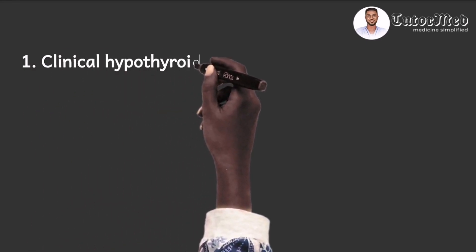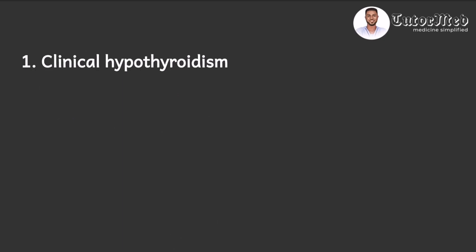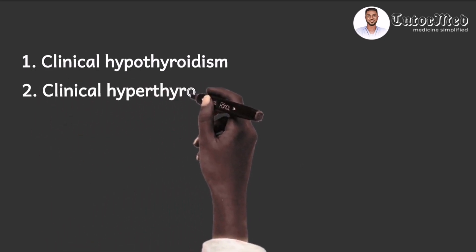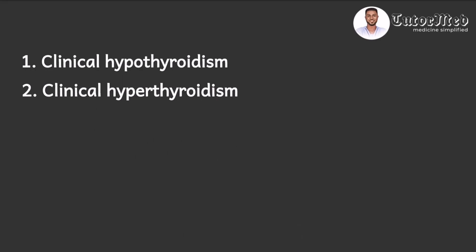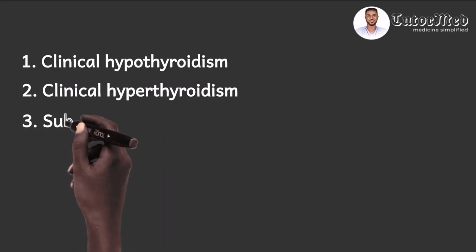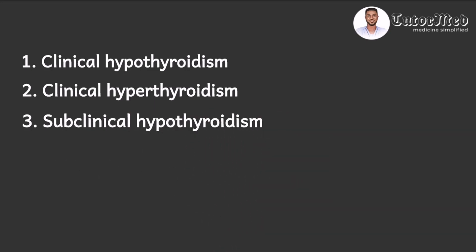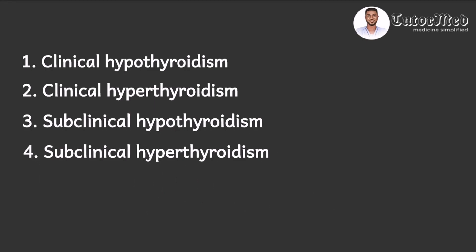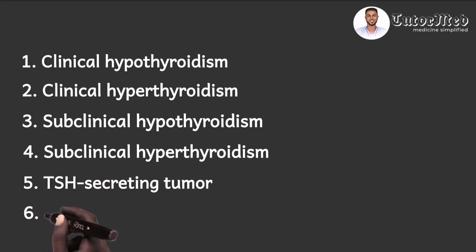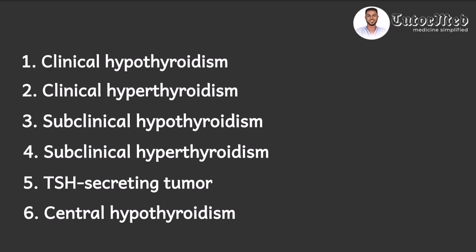By analyzing the thyroid function tests, we can identify several abnormalities. These include clinical hypothyroidism, clinical hyperthyroidism, subclinical hypothyroidism, subclinical hyperthyroidism, a TSH-secreting tumor, and central hypothyroidism. We will focus on these six conditions as they are the most commonly tested in exams.